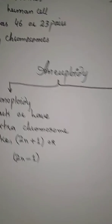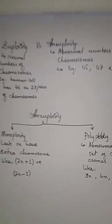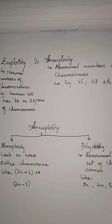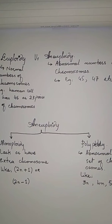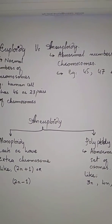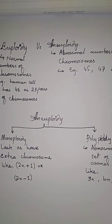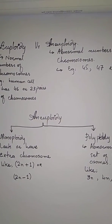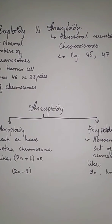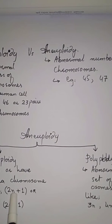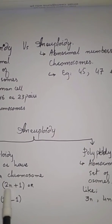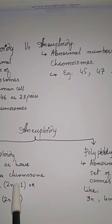There are two types of aneuploidy. The first is monosomy and the second is trisomy. Trisomy means 2N plus one — the normal set has an extra chromosome added to it.